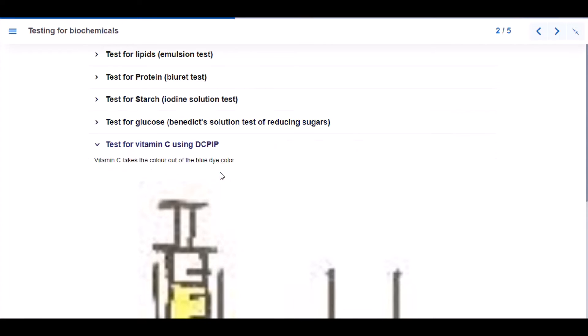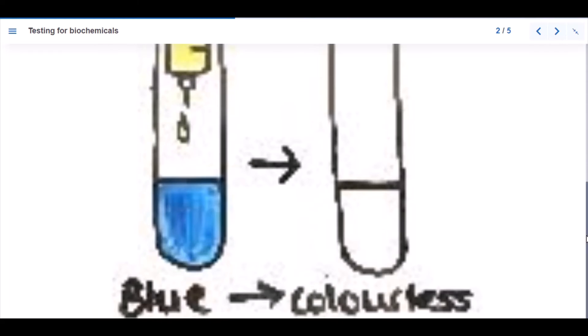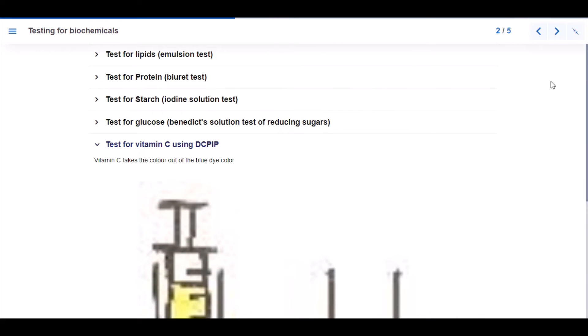Vitamin C takes the color out of blue dye. An illustration is shown here. This is vitamin C before DCPIP is added. When you add DCPIP, it removes the blue color, takes the blue dye color out.